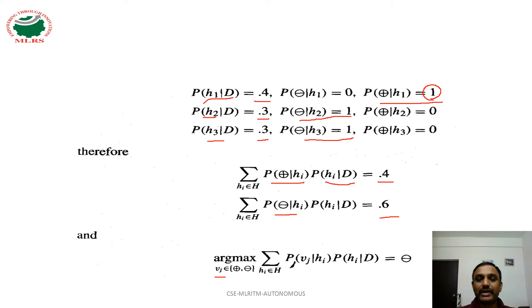for positive it is 0.4, for negative it is 0.6. So negative has the maximum value. We are considering the output of the particular instance is negative.